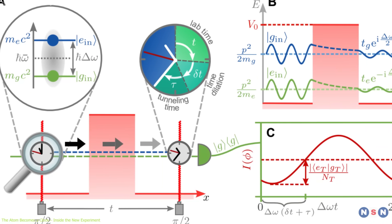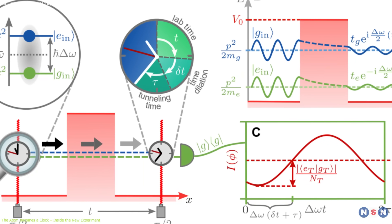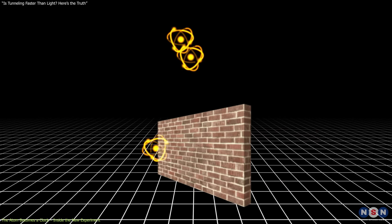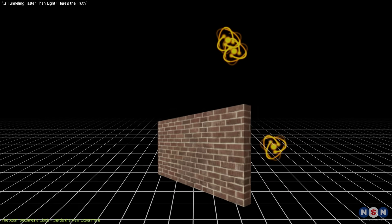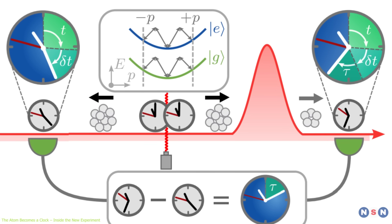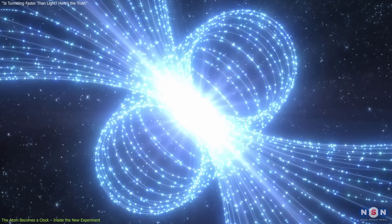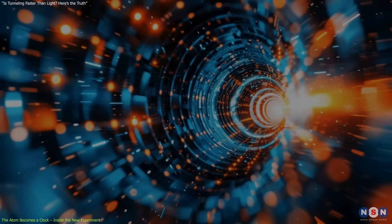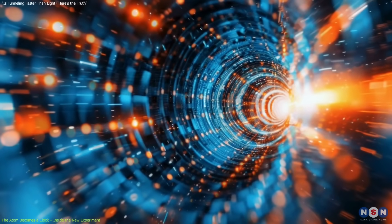Moreover, Shaq and Giese designed a differential measurement scheme. Two identical clocks are launched in opposite directions. One tunnels, and the other serves as a reference. This ingenious setup cancels out common noise sources, such as magnetic fields, laser phase noise, and relativistic time dilation, leaving behind only the pure tunneling delay.